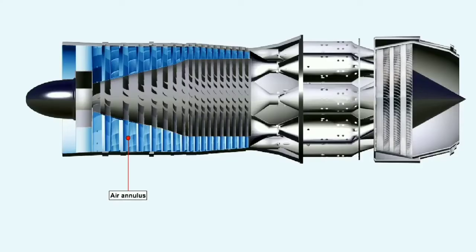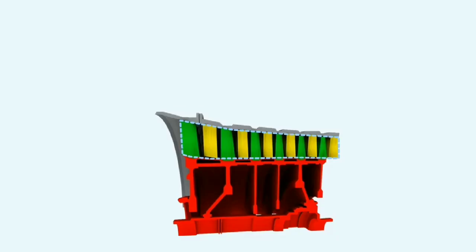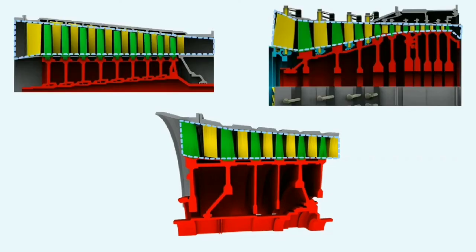The space between the rotor drum and the compressor outer casing is called the air annulus. To maintain the axial velocity of the air reasonably constant as it passes through the compressor — as it is compressed into a smaller volume and its density increases — the size of the air annulus must be reduced. This gradual convergence is achieved by tapering the compressor outer casing, the rotor drum, or in some cases a combination of both.